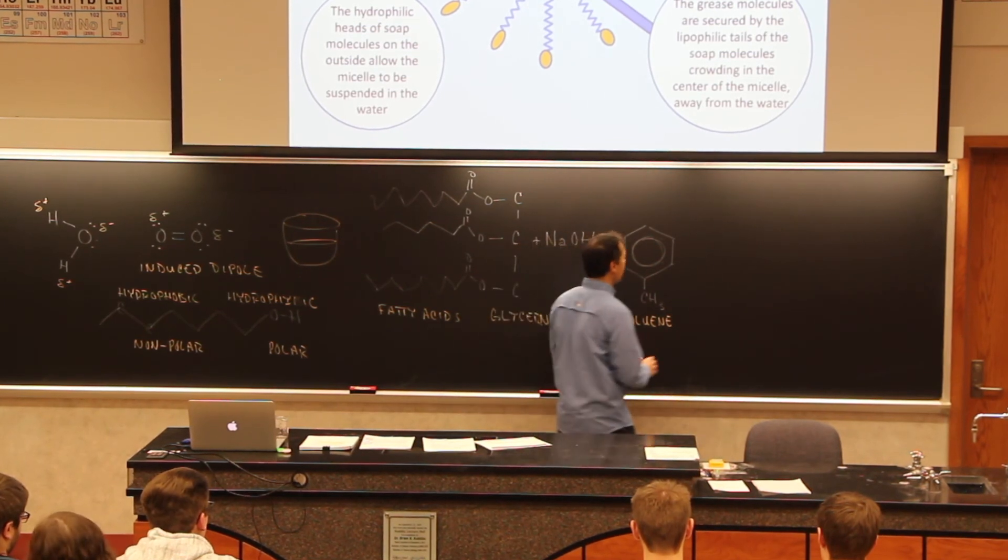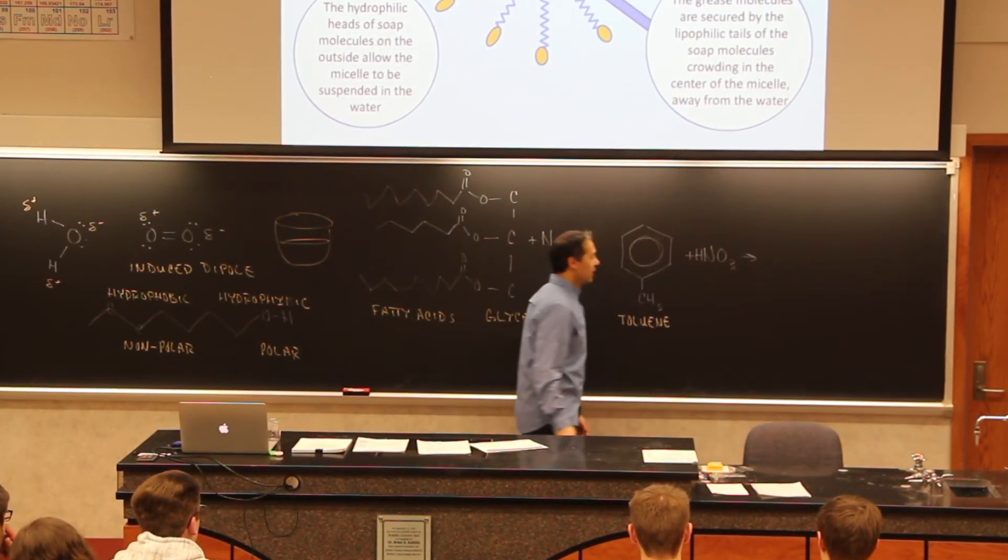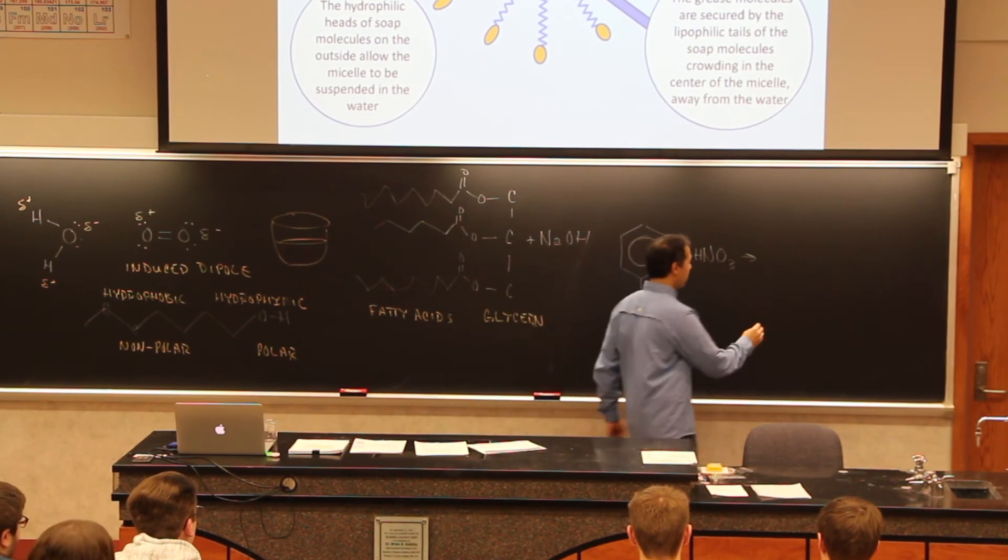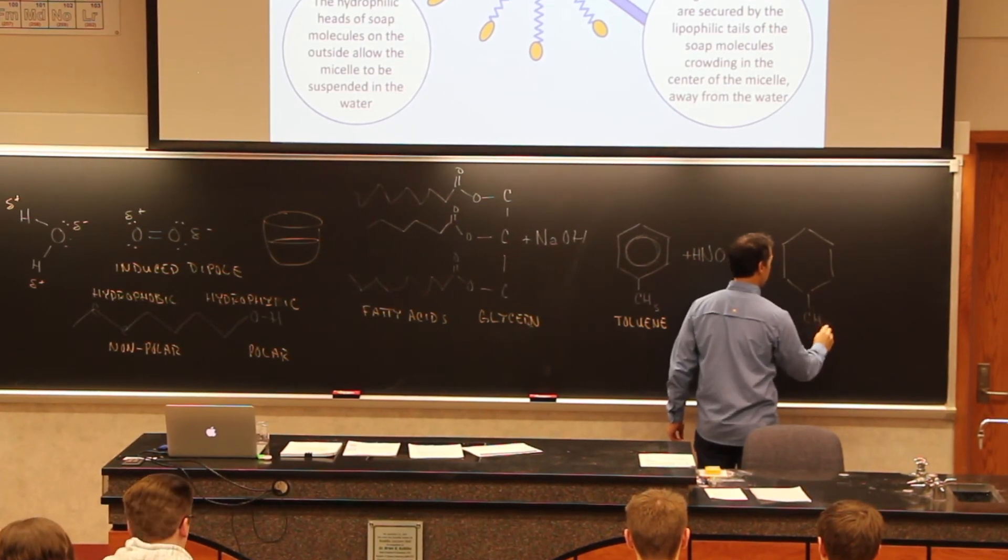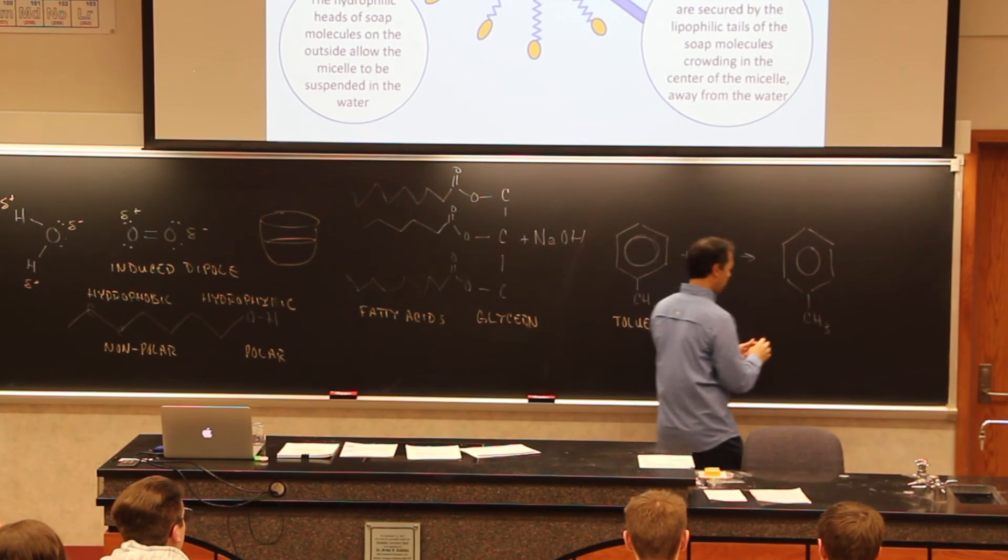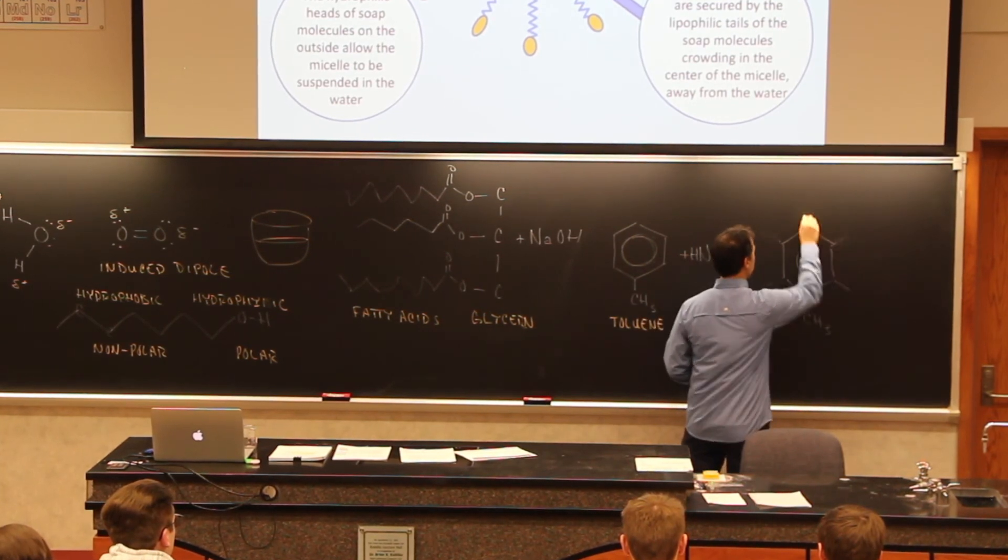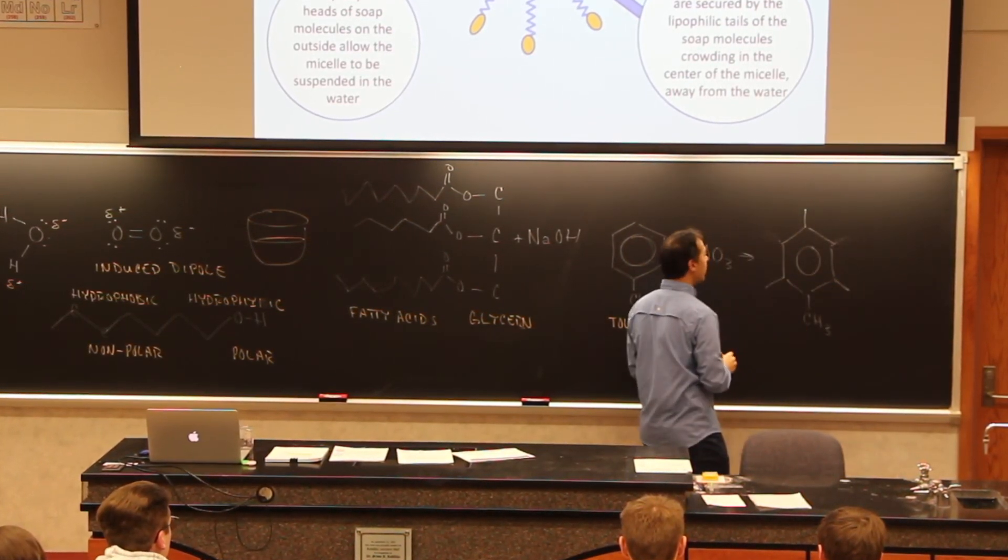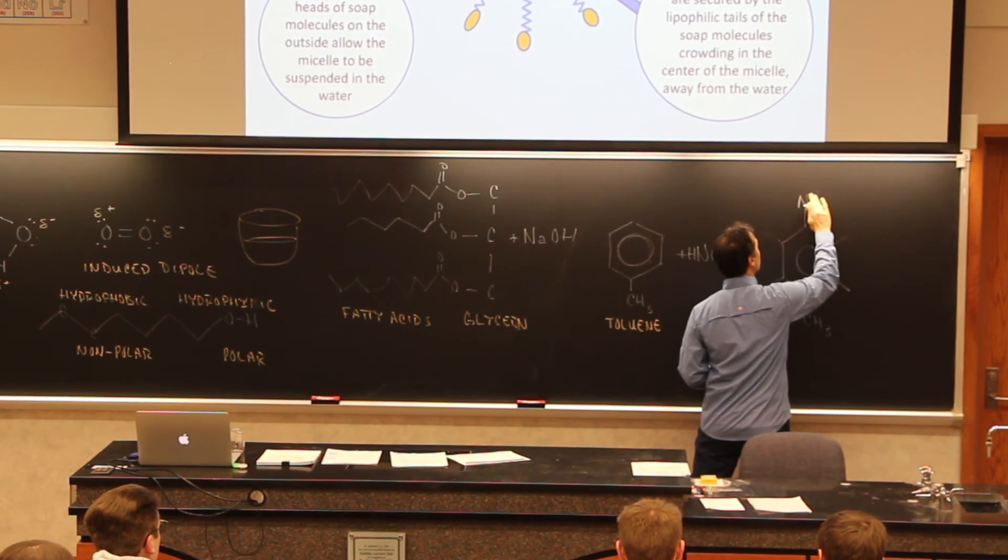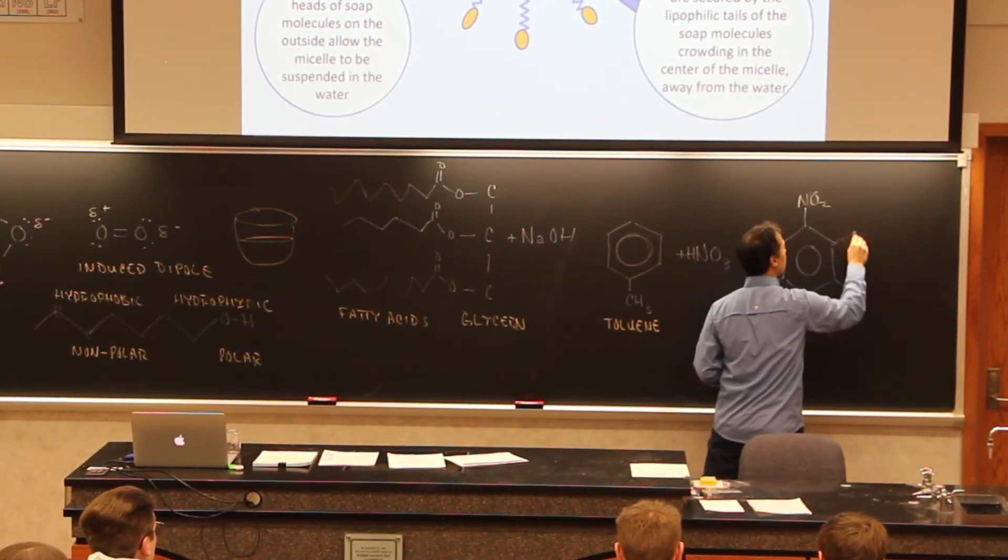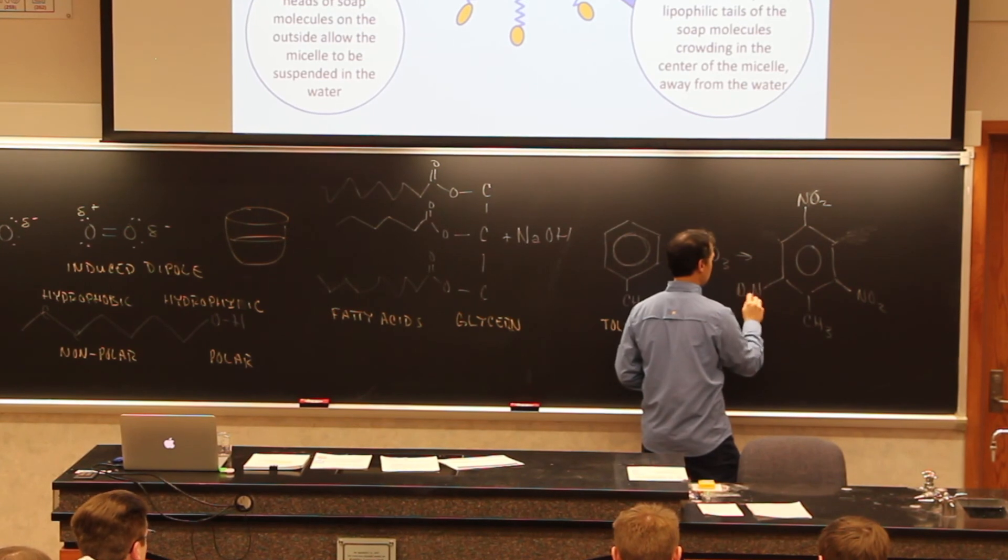If you take toluene and you react that with nitric acid, HNO3, you get something else. That something else looks like this, where we have our toluene, but then we've nitrated it, like this. I think it's NO2.